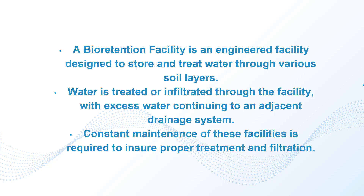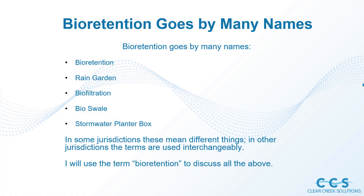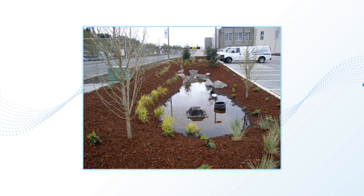Bioretention facilities have many names and may be referred to in different ways depending on your jurisdiction. Here are some of them: bioretention, rain garden, biofiltration, bioswale, stormwater planter box. In Western Washington these are some of the names used, but in some jurisdictions these mean different things, while in others the terms are used interchangeably. Make sure you know what it is referred to in your jurisdiction. Here at Clear Creek Solutions we'll just refer to it as a bioretention facility. Here's a quick picture of what one looks like — you can see there's some water pooled up, which will filter through the soil layers.